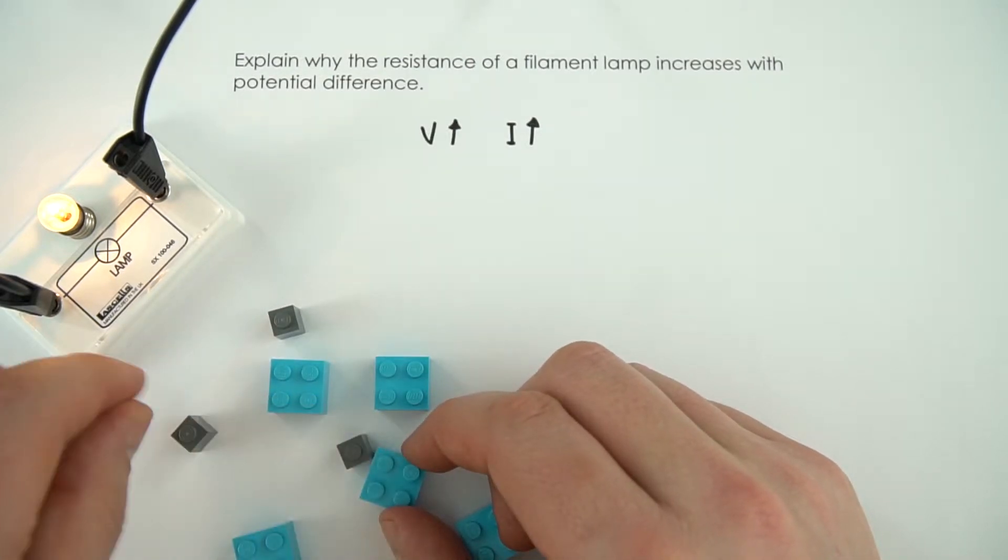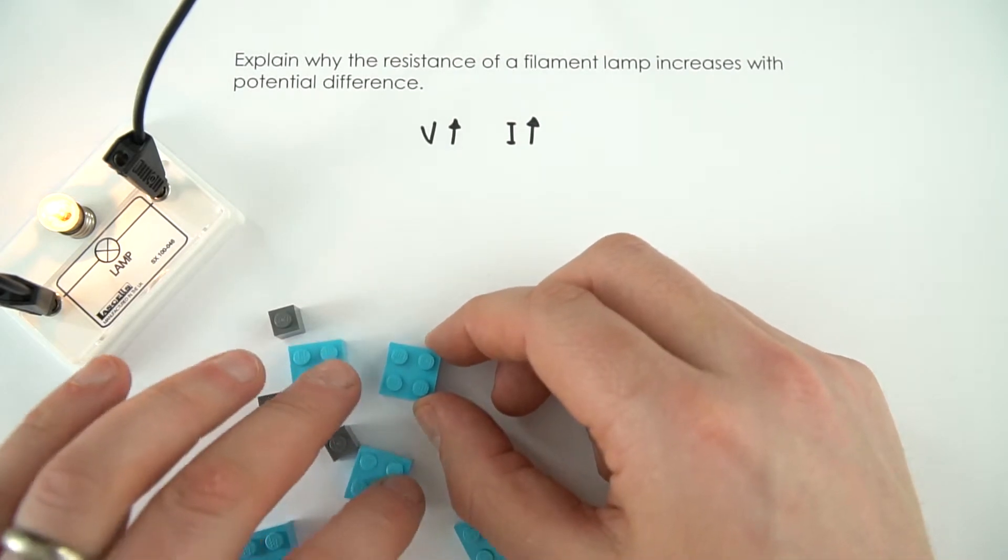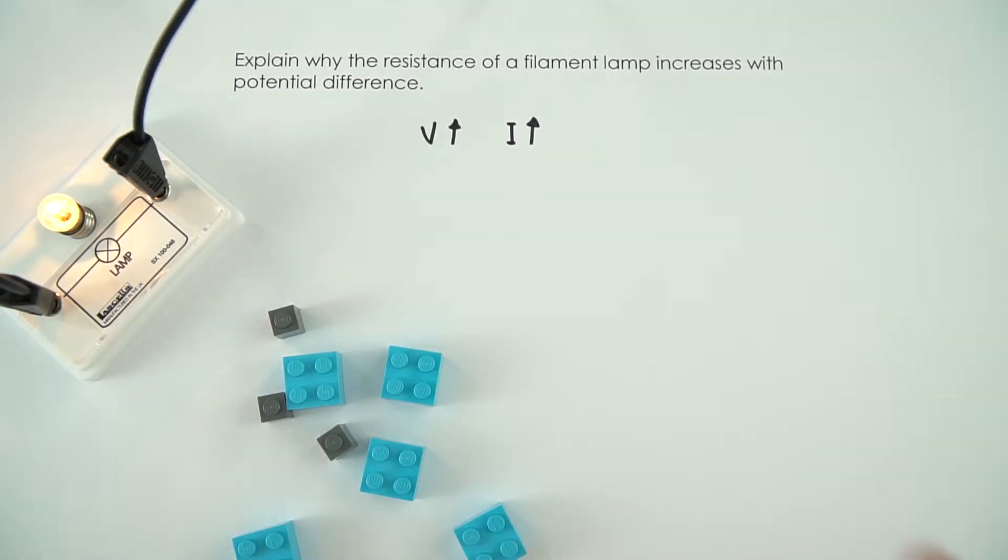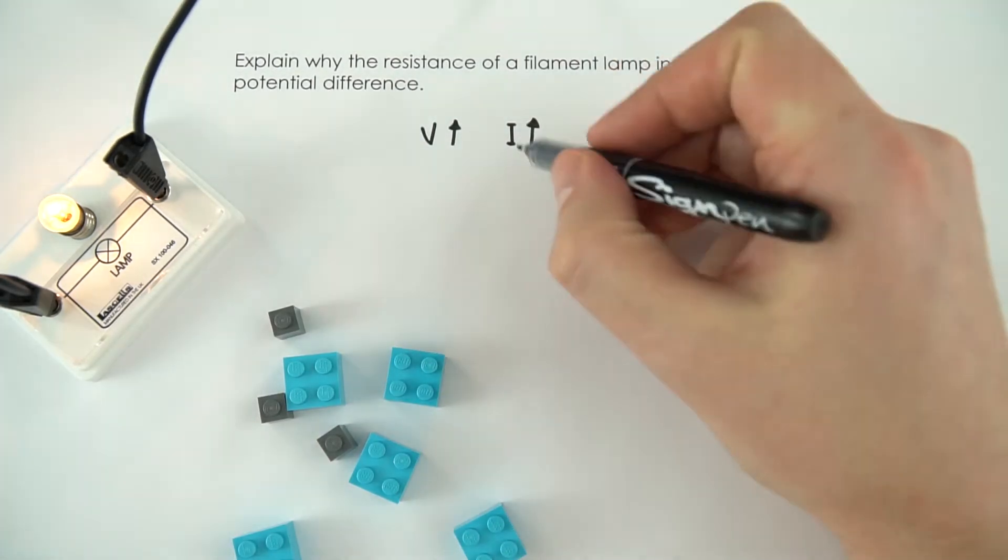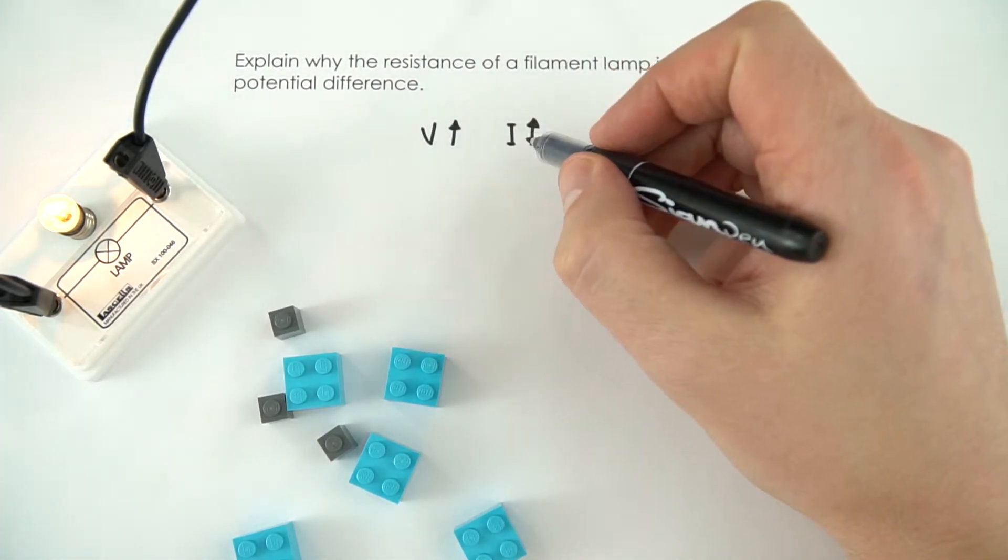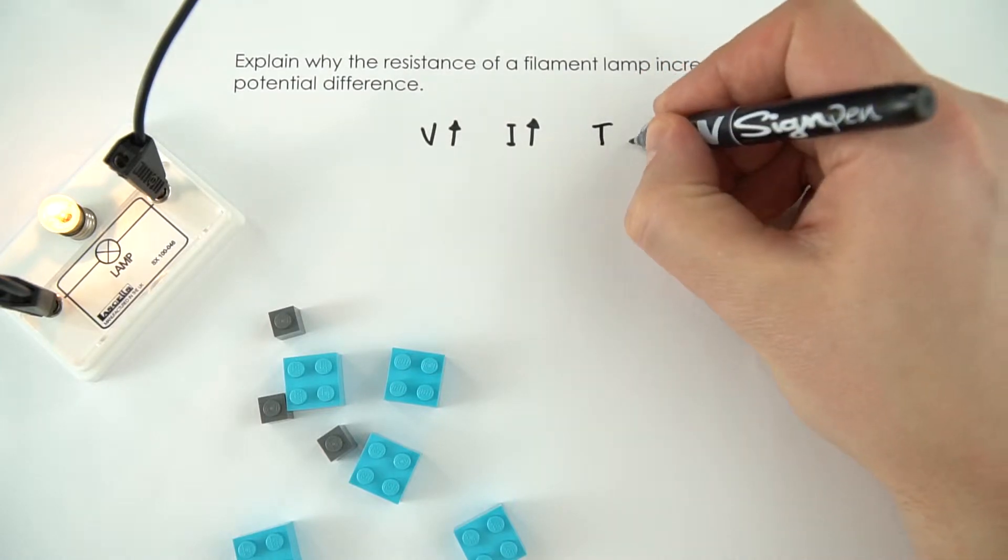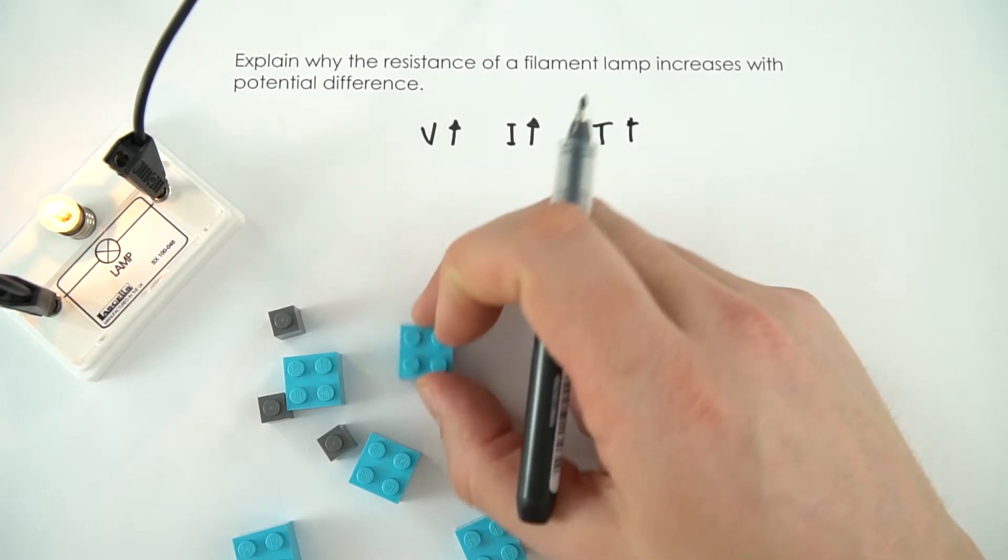As these are flowing past, where you've got a greater current means there's more collisions, and that means more of these things are starting to vibrate even more. You've then got to think about the particle model of matter. When things vibrate more, that means they're hotter. So as you've got a greater current flowing, this means that the temperature of these things increases because there's all of these collisions, so they get slightly hotter.